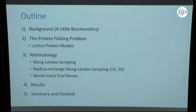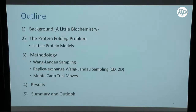The outline for the talk will be to first give a bit of background to motivate the model, so just a little bit of biochemistry. I will then talk about the protein folding problem, why we want to study this, and specifically one approach to studying this, which is the use of lattice proteins. I will then go into the methodology and talk briefly about Wang-Landau sampling, as well as Replica Exchange Wang-Landau sampling. Then I will talk about the Monte Carlo trial moves, discuss some results, and summarize with an outlook and a few questions for the future of the project.